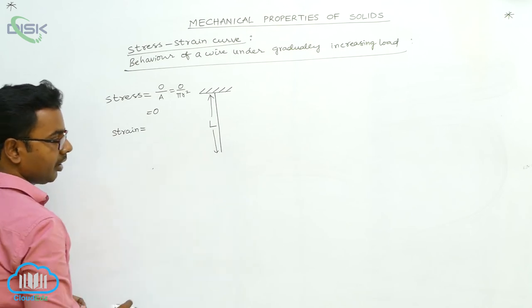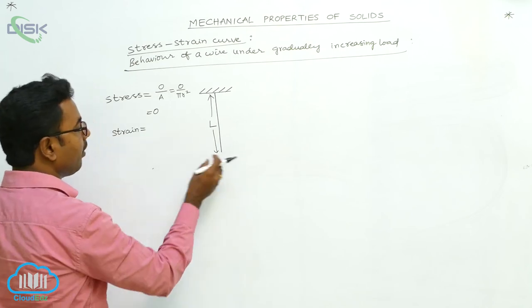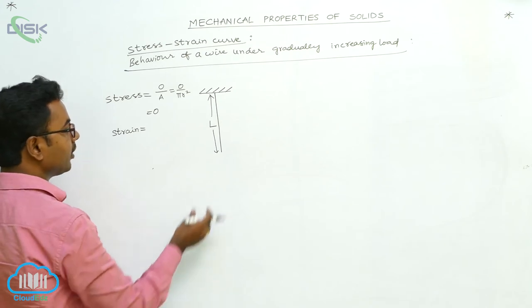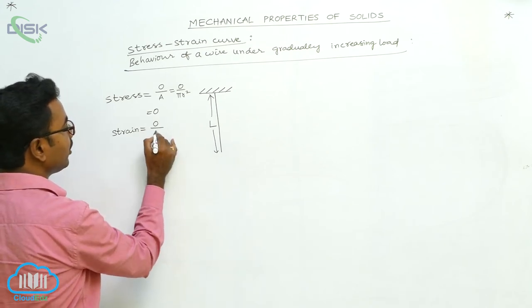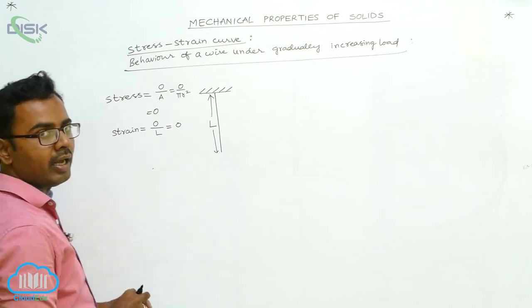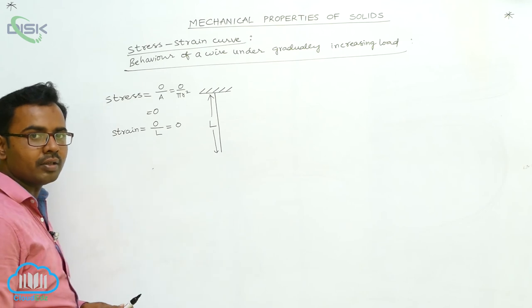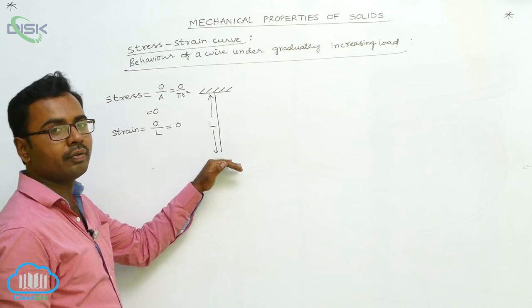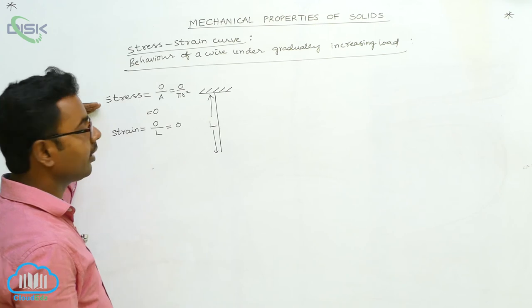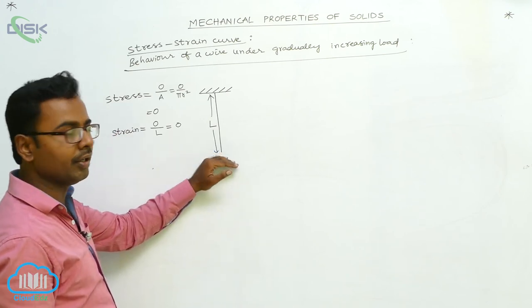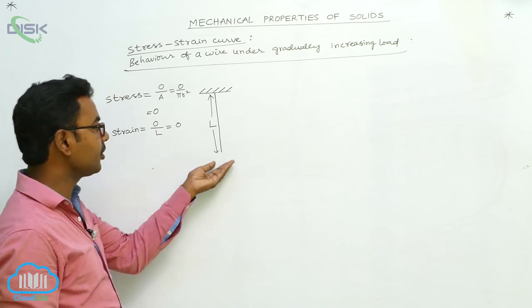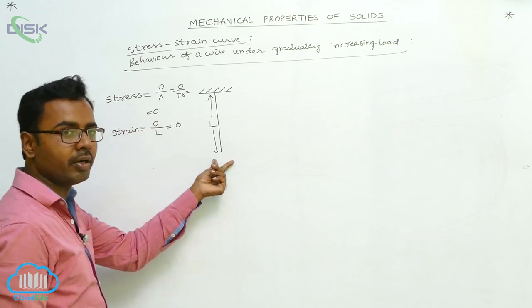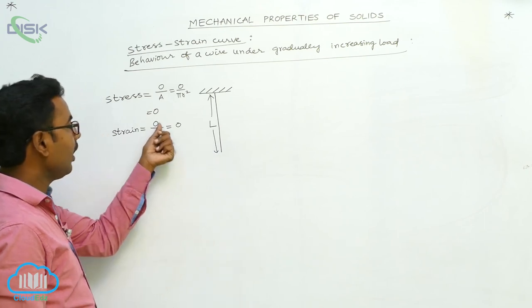When no load is attached, no elongation is produced. Tensile strain equals increase in length divided by original length. With no load, there is no increase in length, so strain is also zero. What we are doing is suspending different amounts of load and calculating the corresponding stress and strain values. For example, we first suspend a 100-gram load, calculate the elongation, and then calculate the stress and strain.